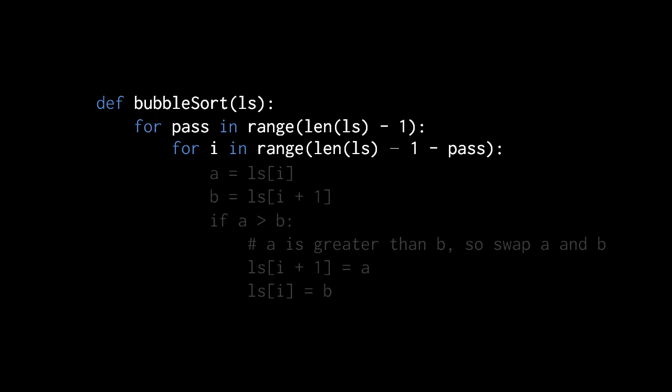Looking at how we would implement this in code, we have our function bubble sort, which takes one parameter — the list to sort — and in the body we have two loops. The outer one is for each pass through the algorithm, and the inner one iterates through the comparisons made in each pass. With five items, we do four passes, because the number of passes is one less than the number of items. In the inner loop, the number of comparisons starts one less than the list length, and decreases by one each pass.